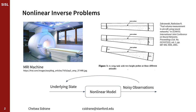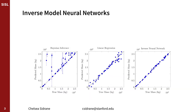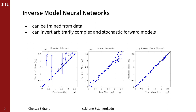I'll use a real-world airplane fuel gauge as a case study throughout this presentation. The fuel tanks of an airplane are typically located in the wings. In our case study, there are pressure sensors placed throughout the fuel tank to measure the liquid level. Given a set of noisy pressure measurements, we would like to estimate the fuel mass. Neural networks provide a compelling solution for solving nonlinear inverse problems because they can be trained from data, can invert arbitrarily complex and stochastic forward models, and for our airplane fuel gauge case study, they perform well.